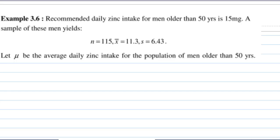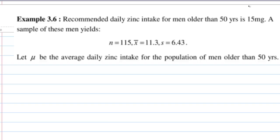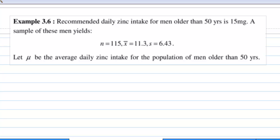The recommended daily zinc intake for men older than 50 years is 50 mg. A sample of these men yields n equal to 115, that means the sample size n is 115, the sample mean x bar is 11.3 mg, and the sample standard deviation is 6.43 mg.